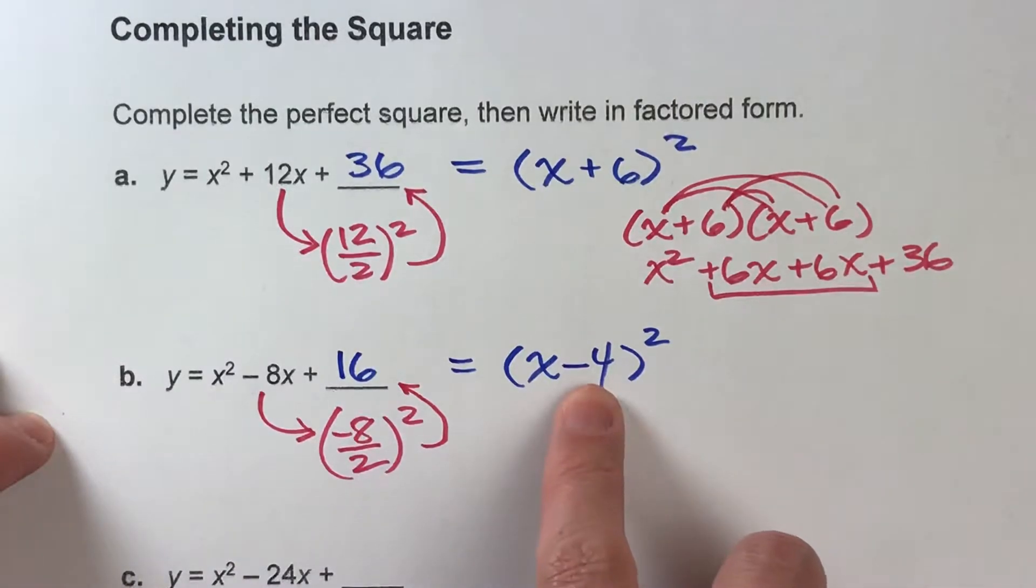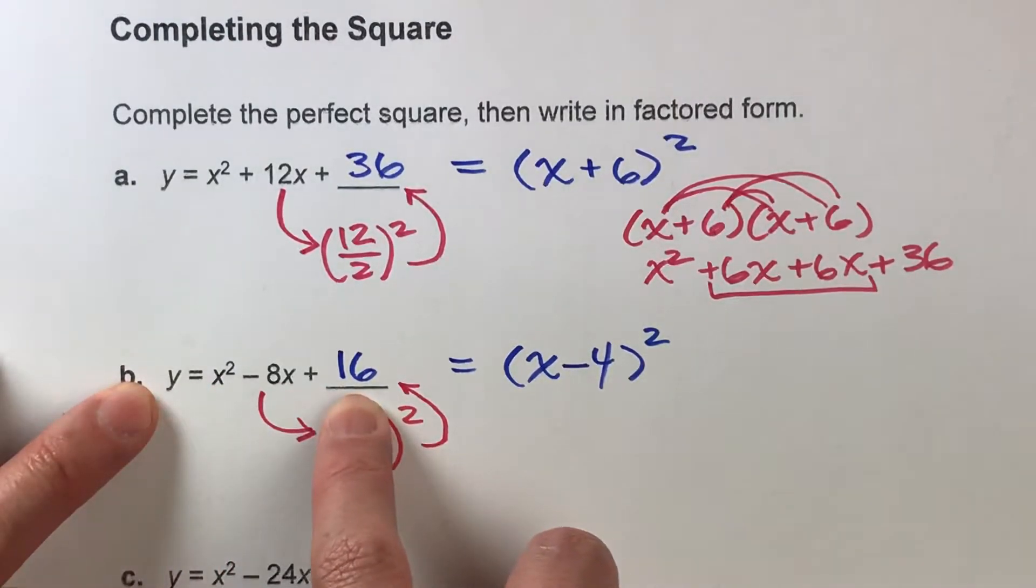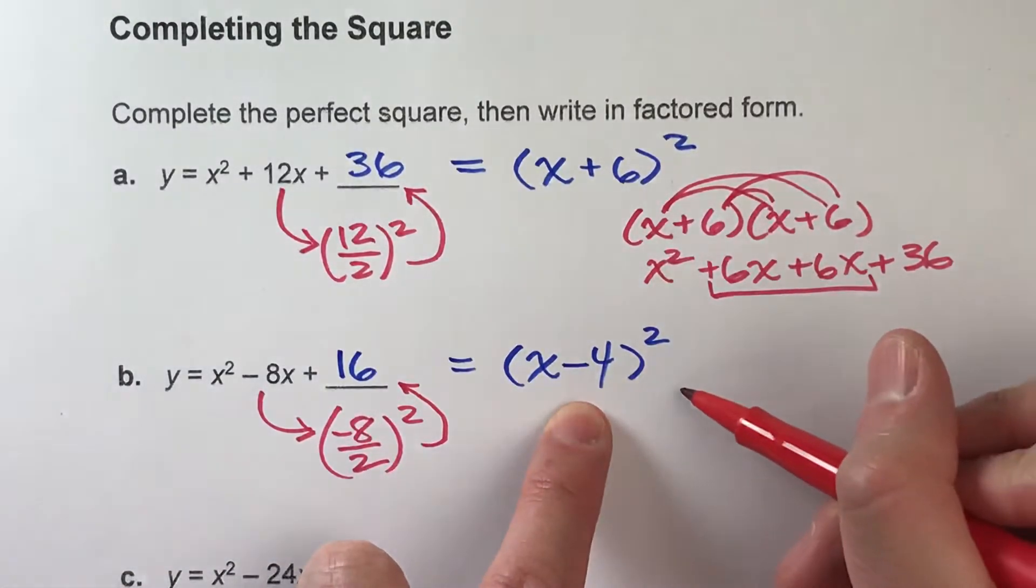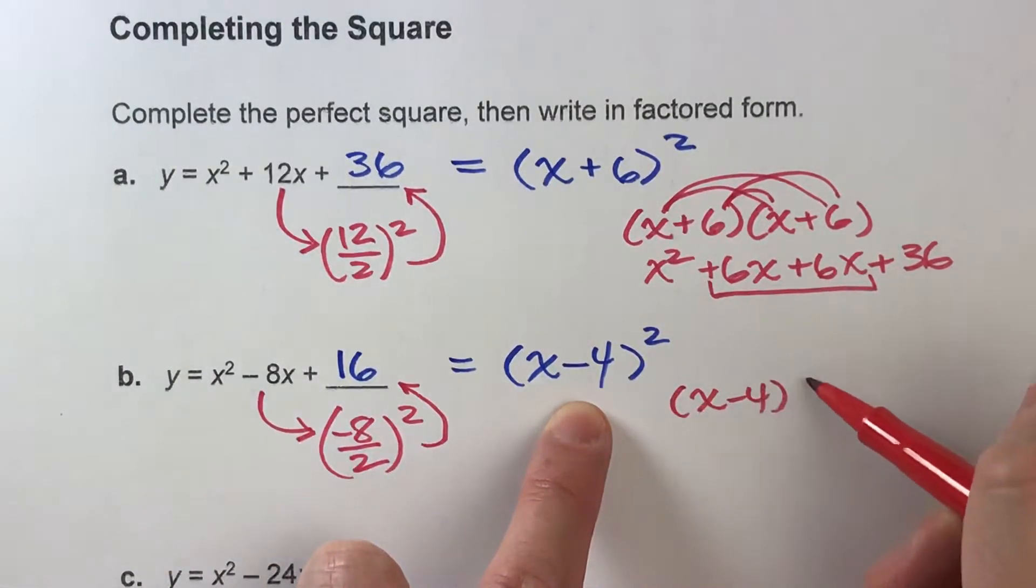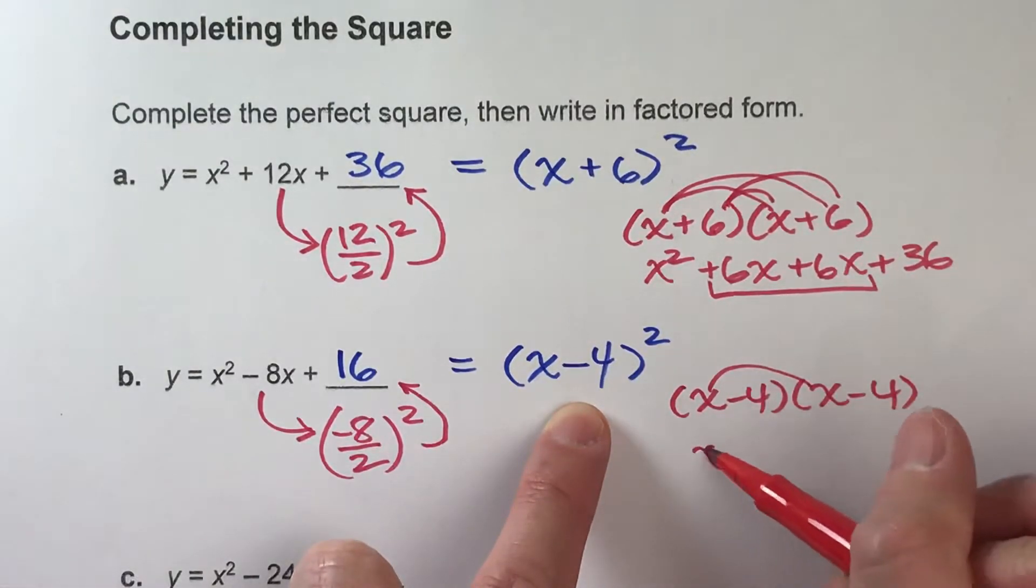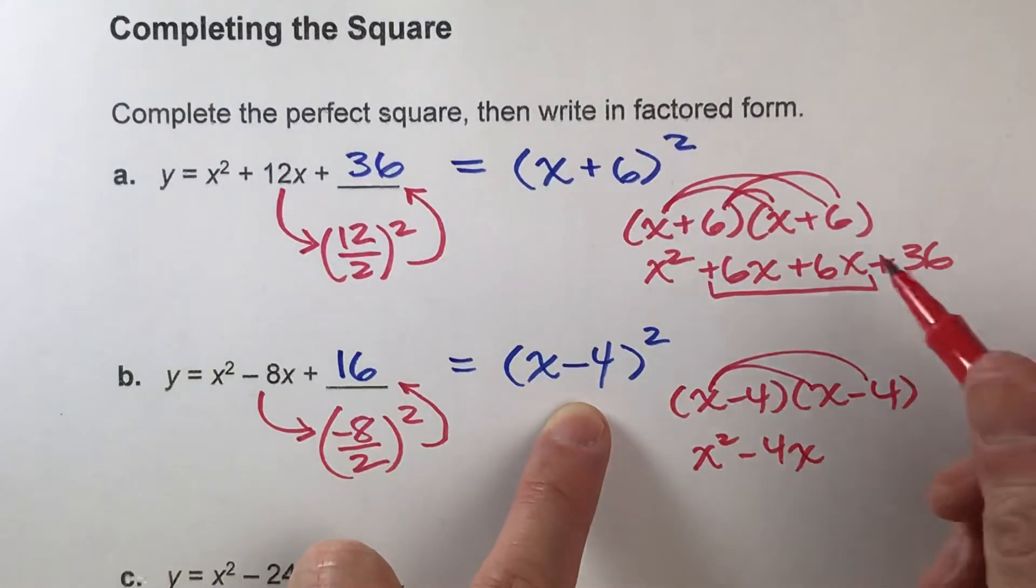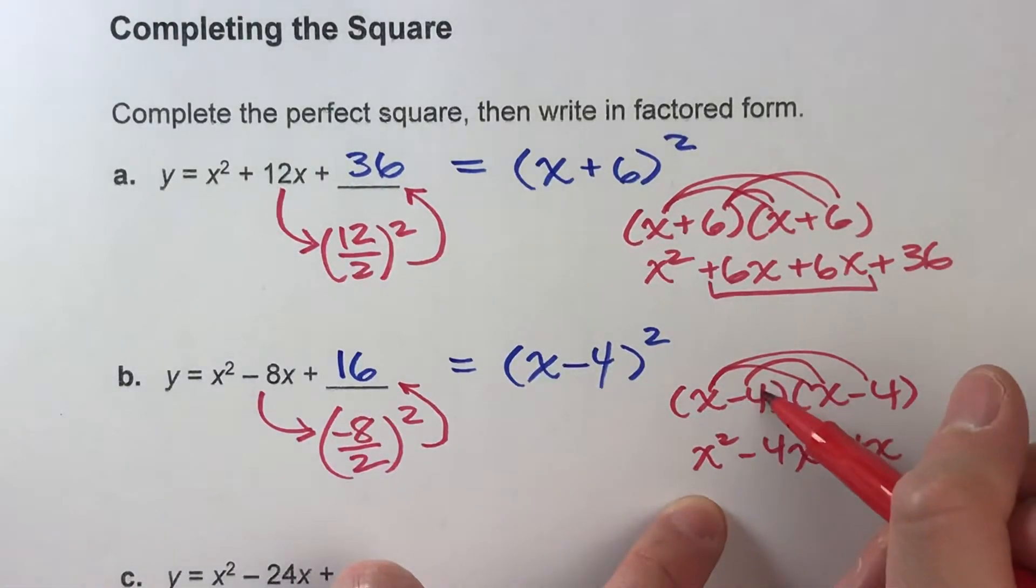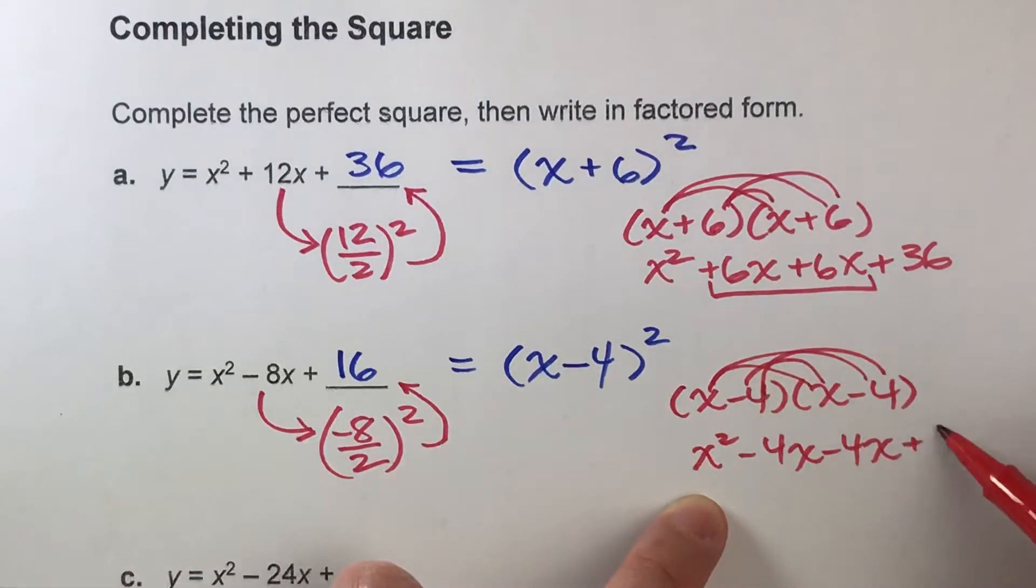So x minus 4 squared is this in factored form. And again, if you're not sure and you want to double check, you can do x minus 4 times itself and double check. x times x, x squared. x times negative 4, negative 4x. Negative 4 times x, negative 4x. And negative 4 times negative 4, positive 16.